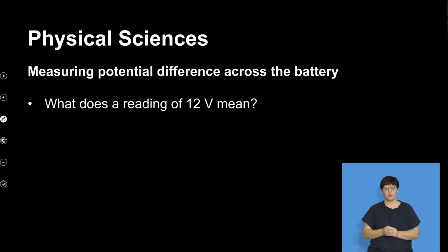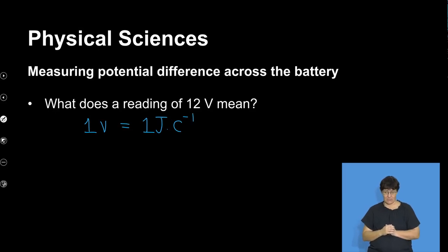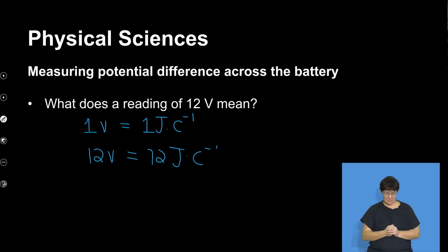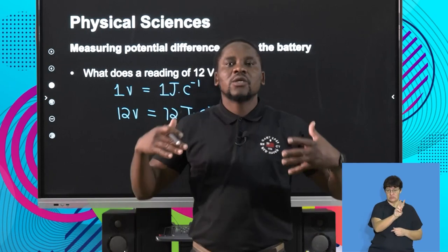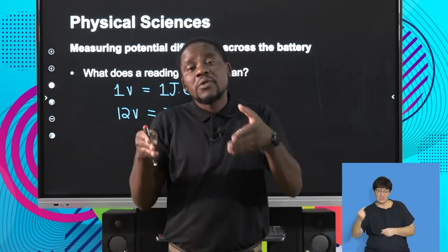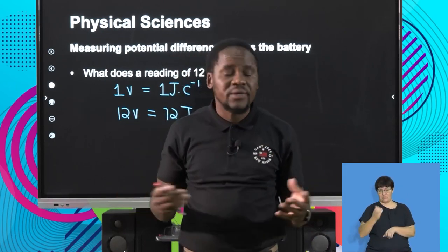What does 12 volts mean? If one volt equals one joule of energy or work done for every coulomb of charge, then 12 volts equals 12 joules of work done for every coulomb of charge. Equivalently, if we have 24 volts, it means there are 24 joules of work done for every coulomb of charge. When we say per unit charge, we're talking about one coulomb of charge as the SI unit.